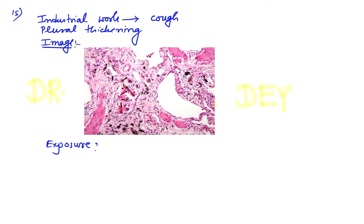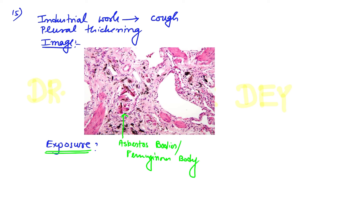Question number 15 was a big clinical question. An industrial worker presented with complaints of cough. On examination, pleural thickening was found along with carcinoma. On biopsy, an image was given. The main clue was the image, which shows an asbestos body, also popularly known as a ferruginous body. Asbestos body or ferruginous body is commonly seen because of long-term exposure to asbestos. So the answer is asbestos.